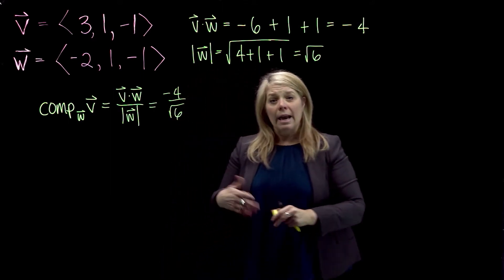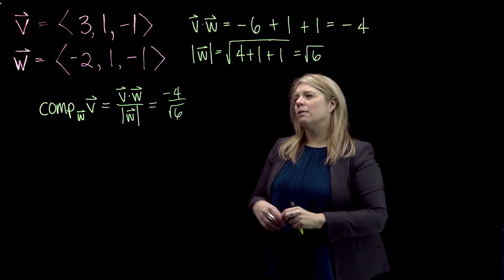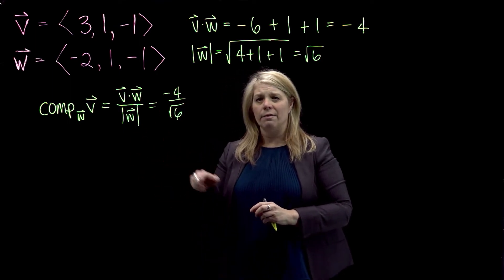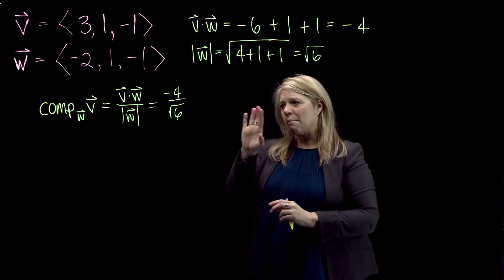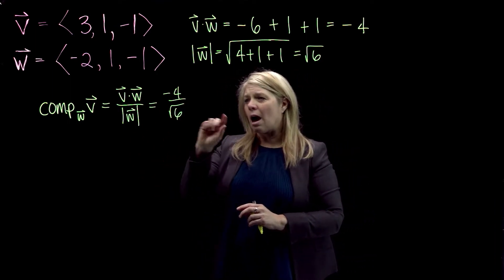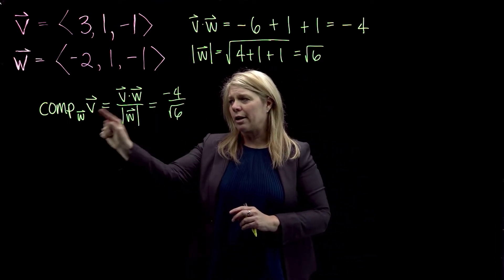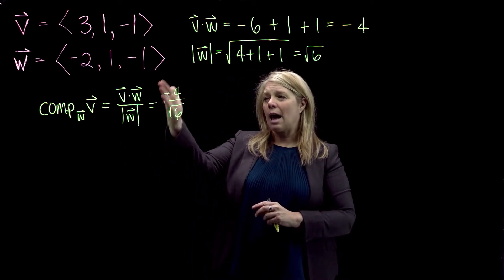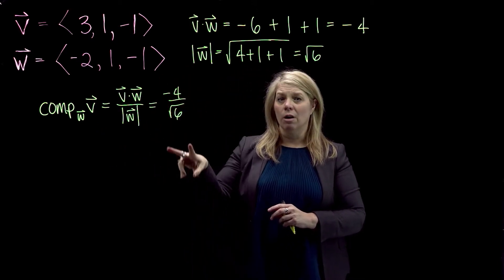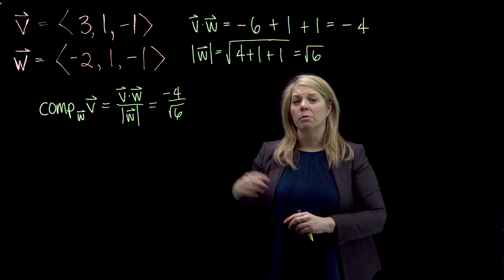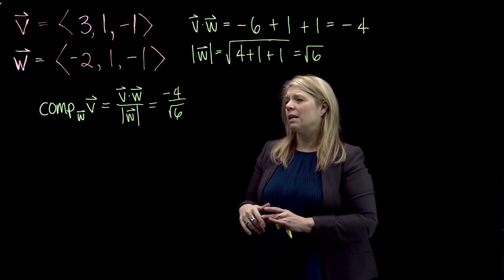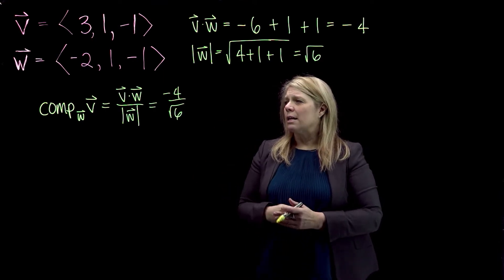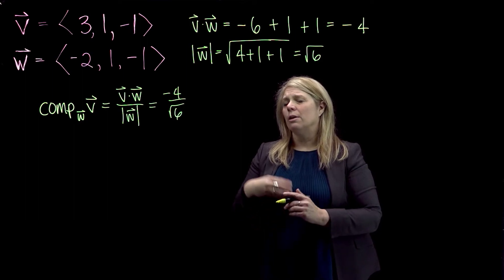The negative tells us that when we visualize V along W, that component is going to be in the opposite direction of W. The absolute value of this tells us how long that vector would be. We will look at the graph at the end of the video. That's the component of V along W.